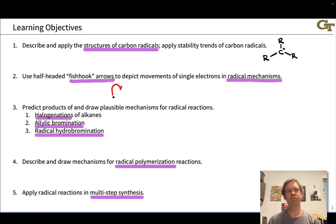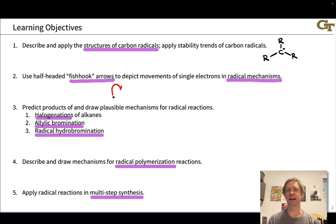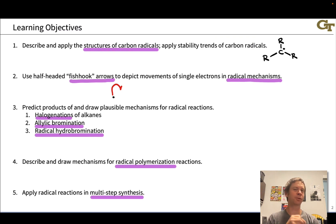We're going to start by introducing the structures of carbon radicals in general terms, talking about how we think about radical structure, and the general key idea that radicals are electron-deficient species quite frequently, especially when they're at carbon. To draw radical mechanisms, we are going to use curved arrows, just like we would in polar or ionic mechanisms, but we show the movement of one electron at a time, since any radical mechanism, by definition, has an odd number of electrons involved.